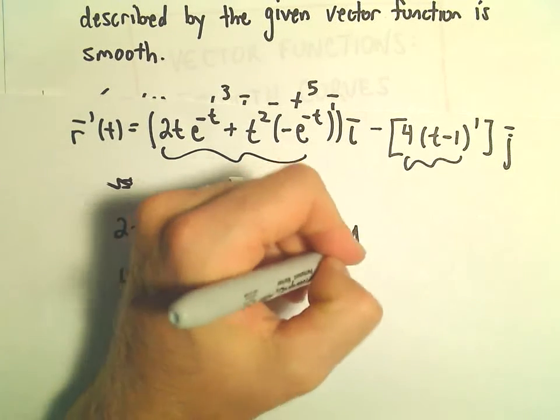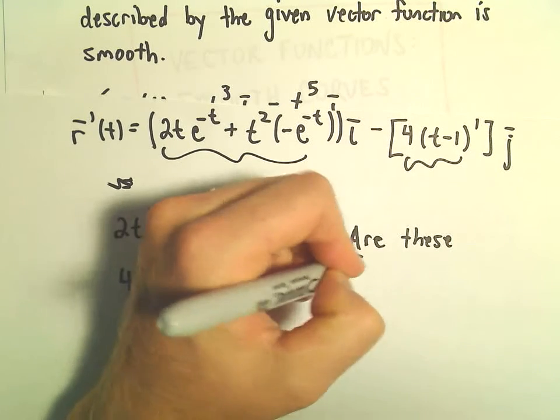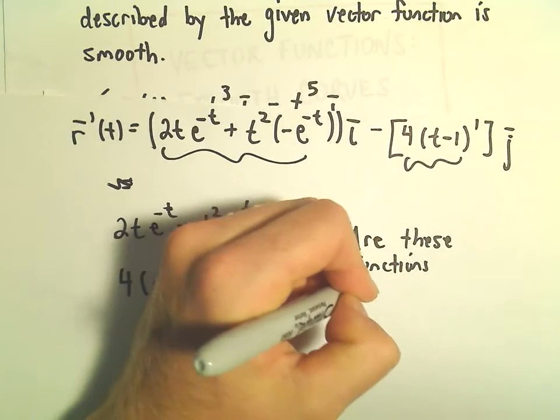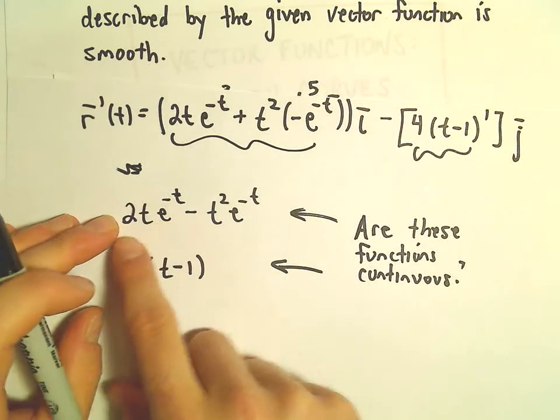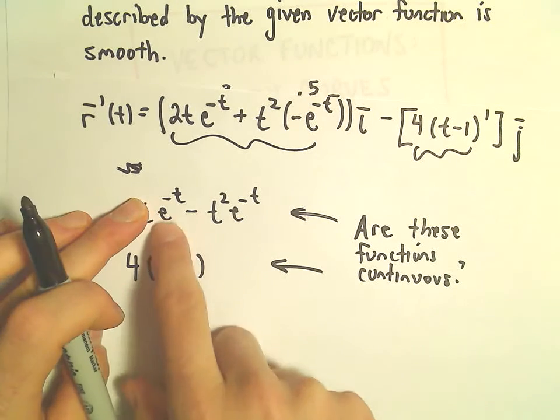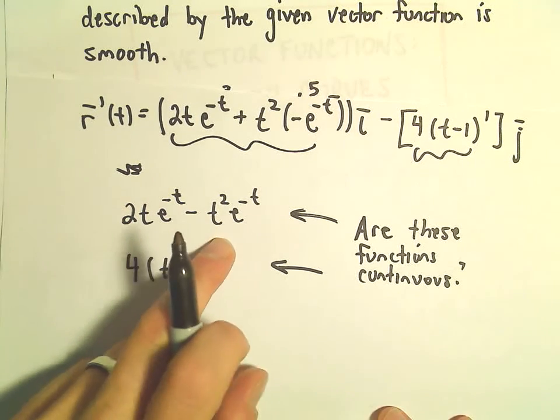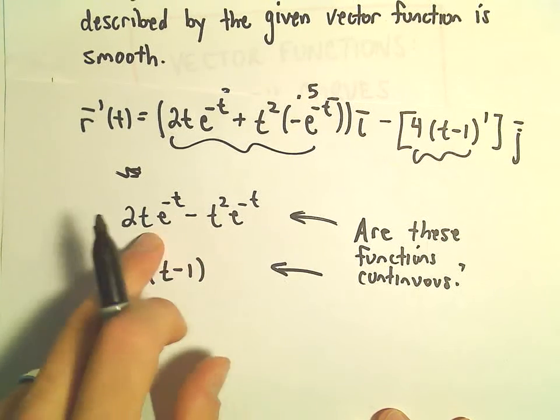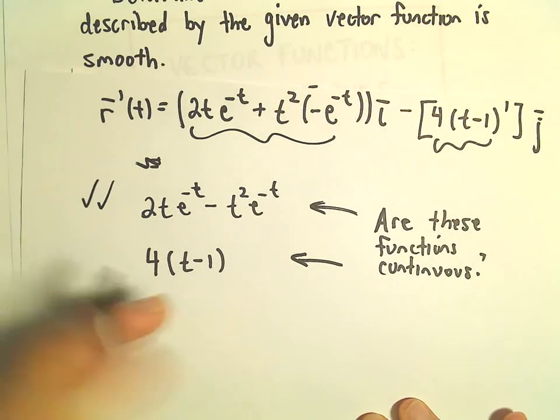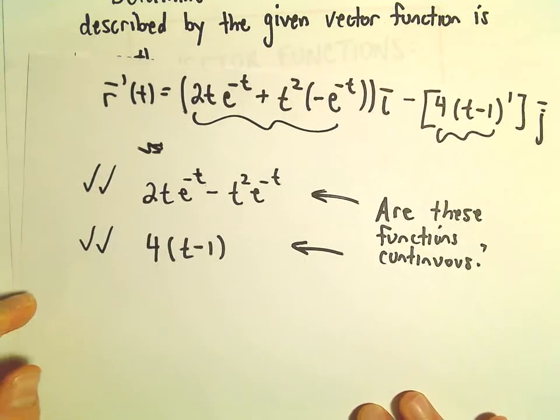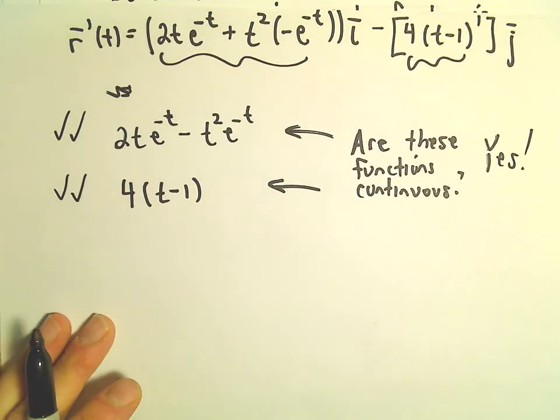So again, we have to ask ourselves, are these functions continuous? So again, there is no restriction on our value for t. 2 times t is going to be continuous. e to the negative t is a continuous function. If you multiply continuous functions, you get a continuous function. Same thing with t squared times e to the negative t. If you subtract two continuous functions, they're continuous. 4 times t minus 1 is definitely also continuous. So yes, both of these functions are continuous. So no issues just yet.